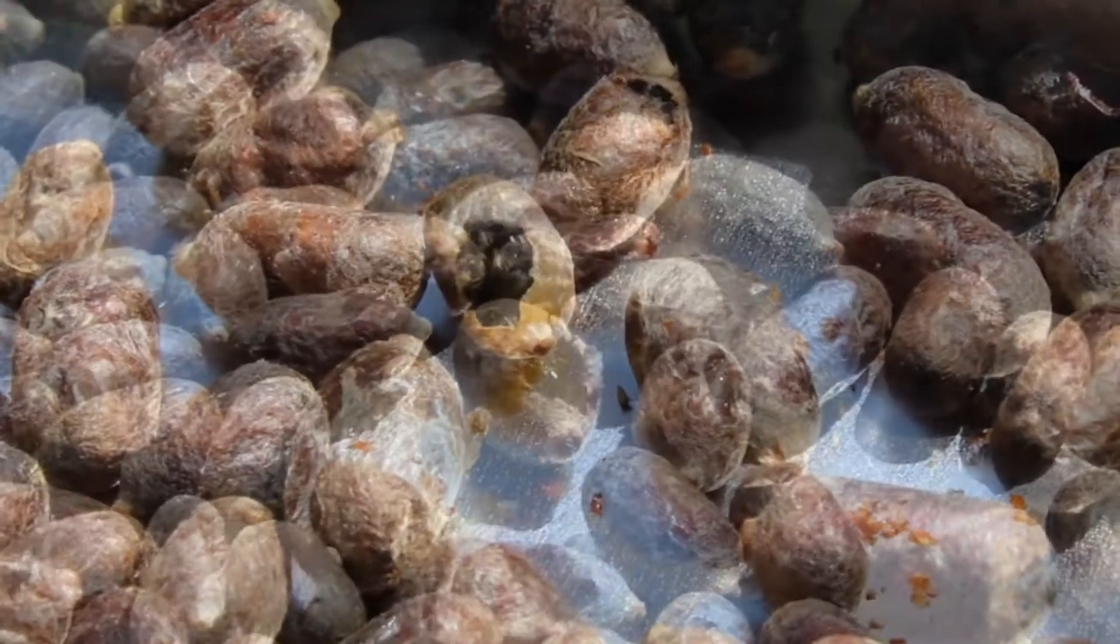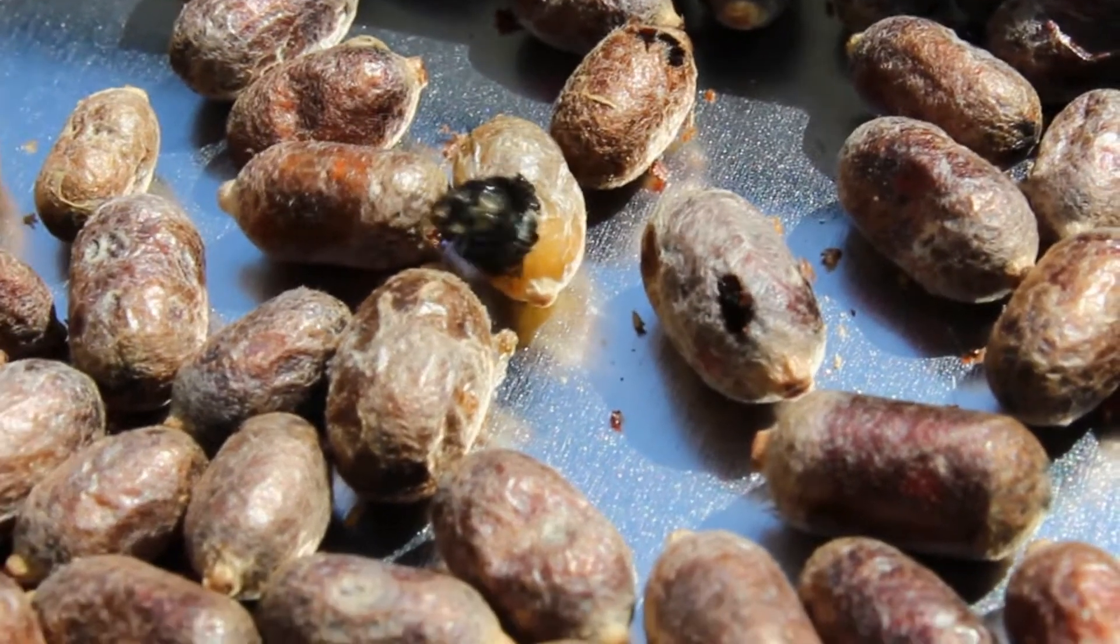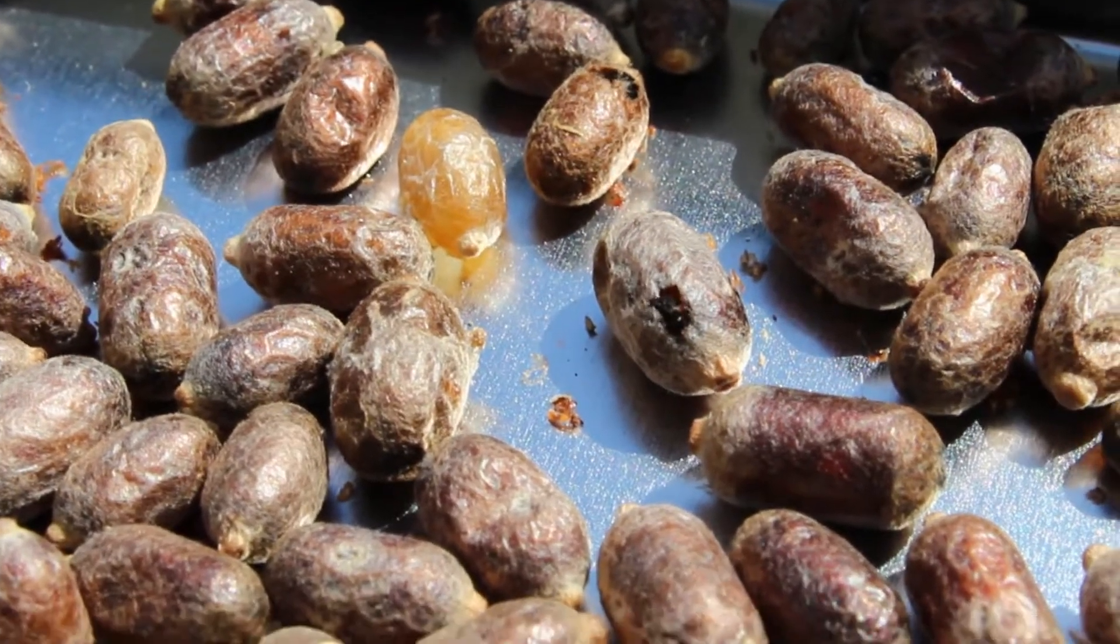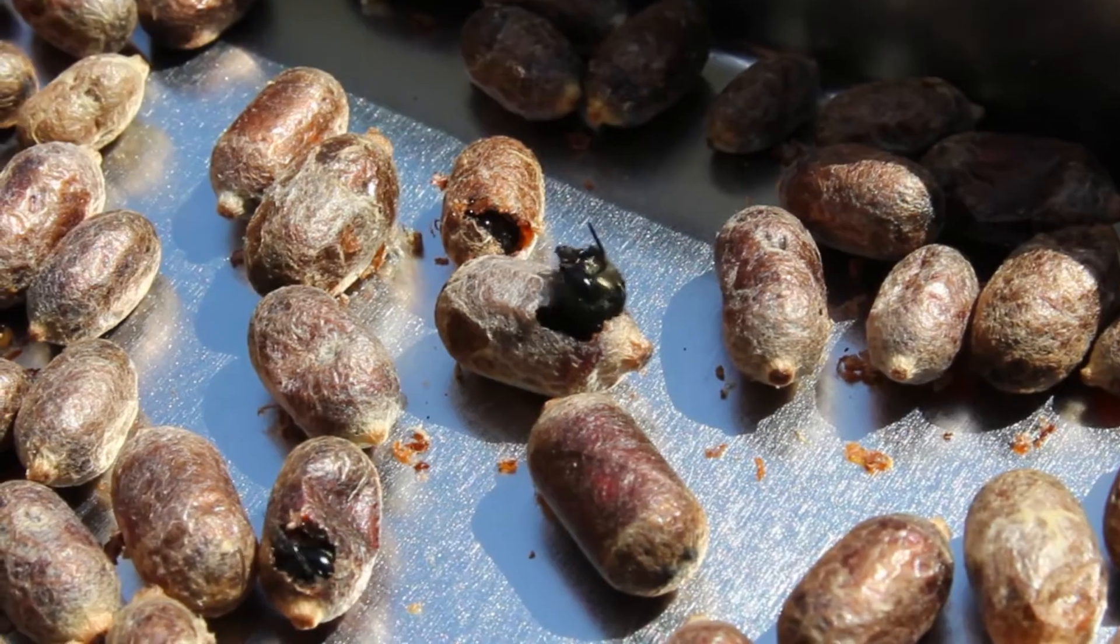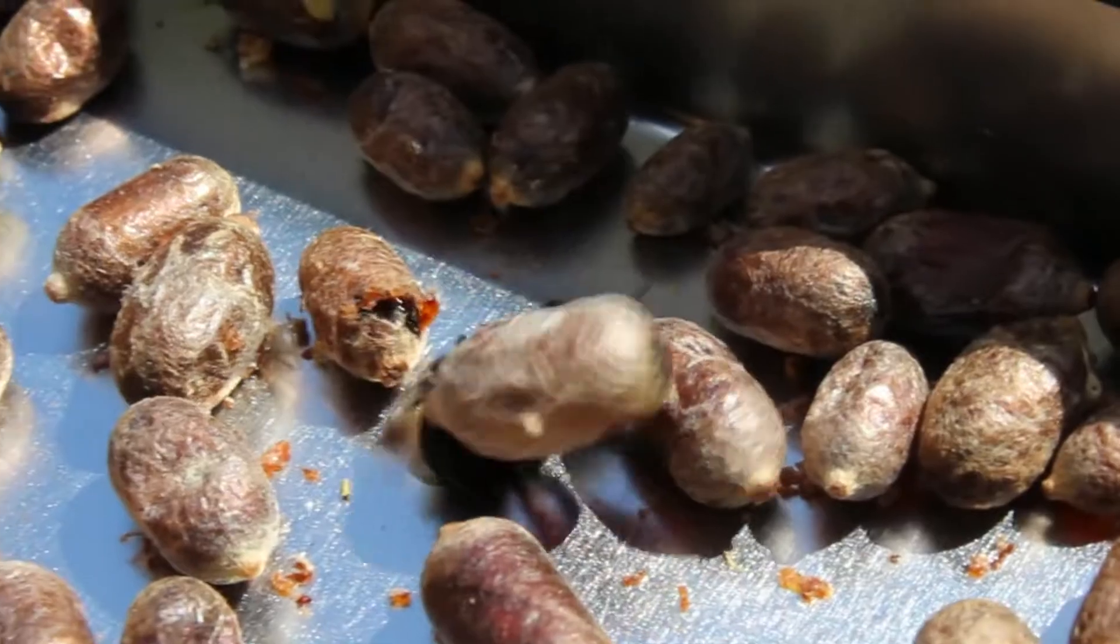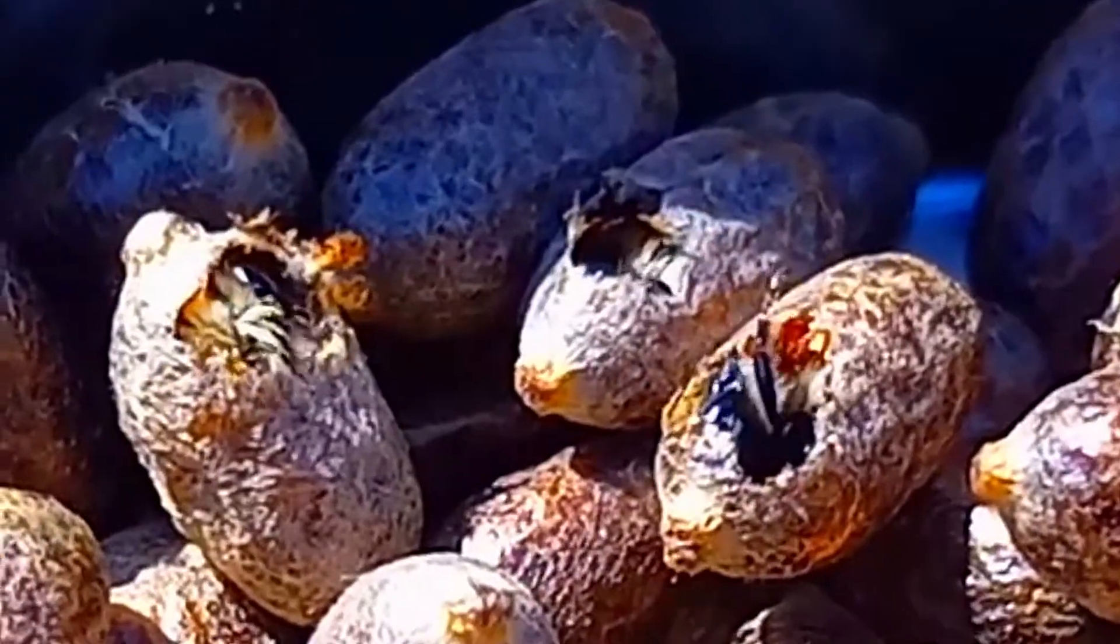The male bees nearer the front of each tube will hatch first. They are easily recognizable with their tufts of white hair atop their head and across their thorax. They also have longer antennae and are slightly smaller than the females. The female bees will not emerge for another week or so, ensuring there are plenty of male bees available for mating.